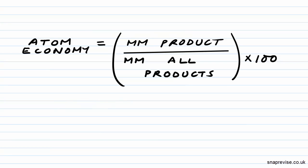our desired product divided by the molar mass of all products, multiply by 100 to give us a number between 1 and 100 as a percentage.